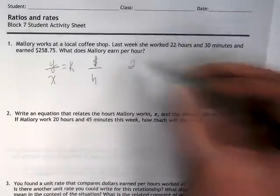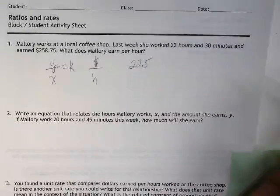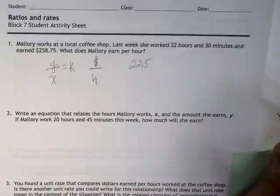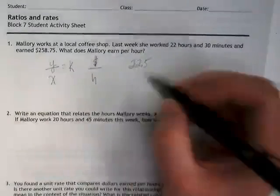That's going to give us 22.5. Where did I get the 0.5? The decimal. Nathan? 30 minutes is half of an hour. 30 minutes is half of an hour.